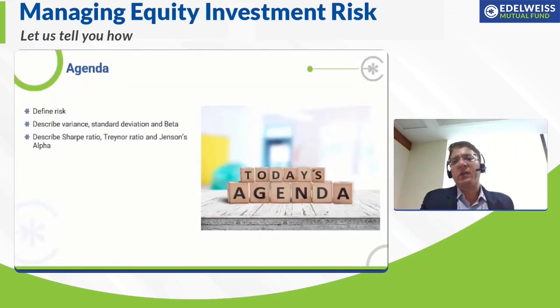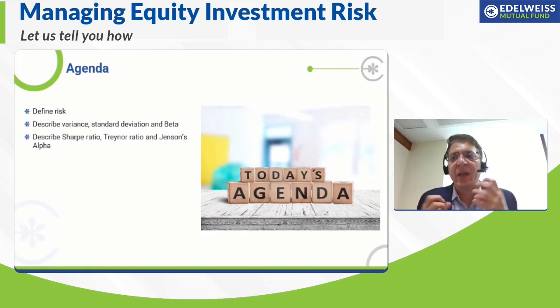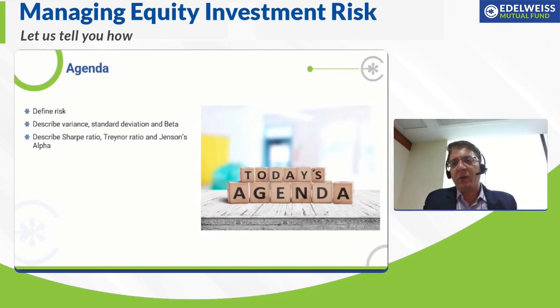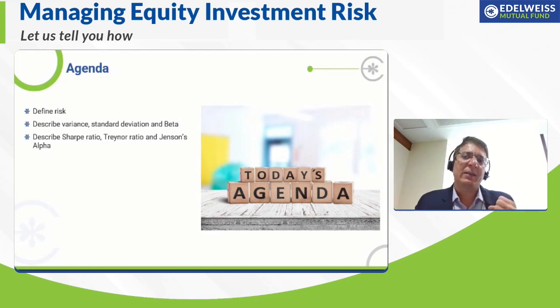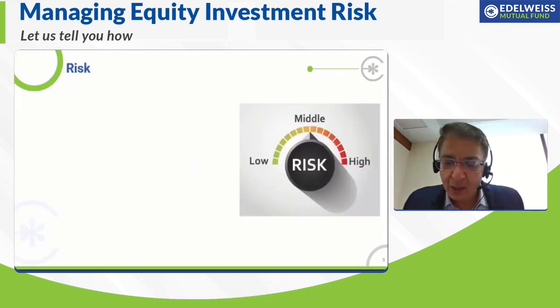That's what I endeavour to do in the next 35 to 40 odd minutes. The agenda we'll cover is: we'll start with what risk is, then look at terms like variance, standard deviation, and beta. We'll then look at some ways of measuring risk in terms of Sharpe ratio, Treynor ratio, and Jensen's alpha. That's going to be my coverage, and let's start with understanding what risk is.